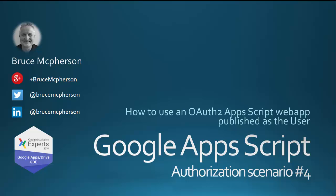This is the fourth video in the series on the mysteries of OAuth 2 and Apps Script. In previous videos in this series, I covered borrowing a token from Apps Script, using a service account, and creating a self-maintaining token infrastructure for a script that's supposed to be run as the owner of that script.